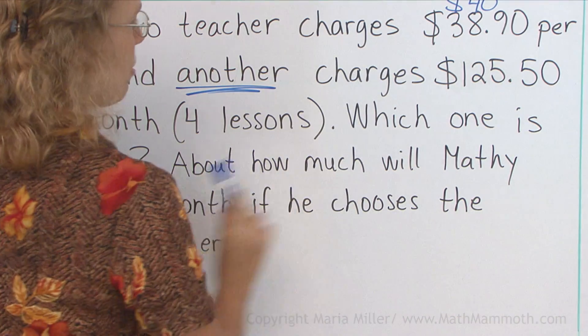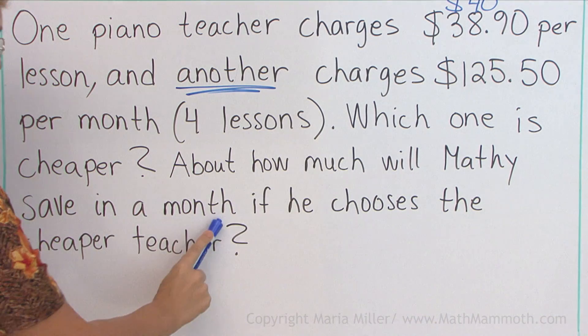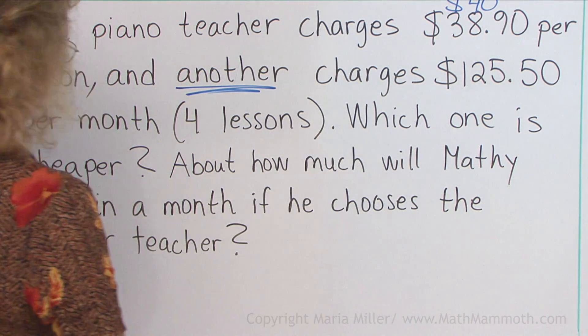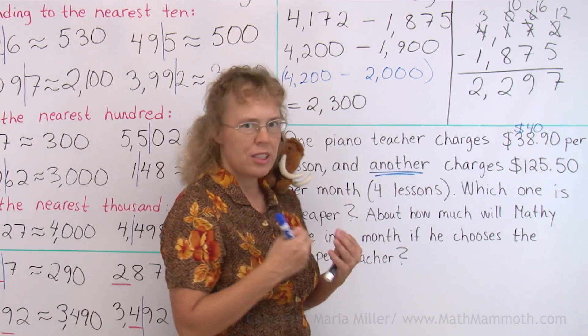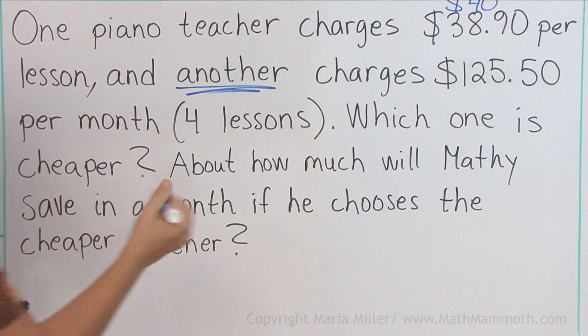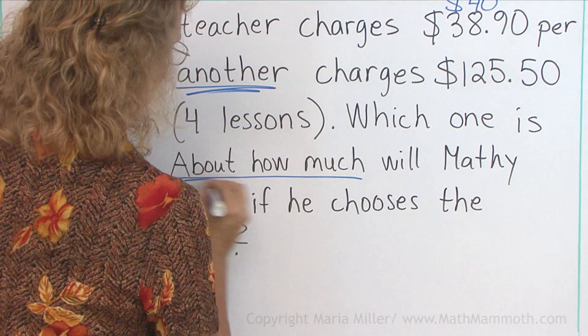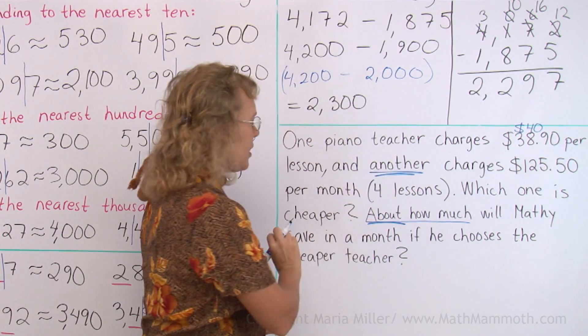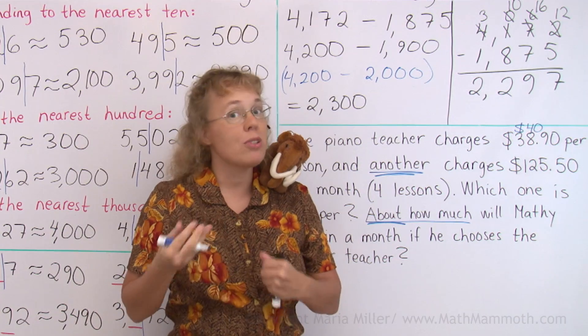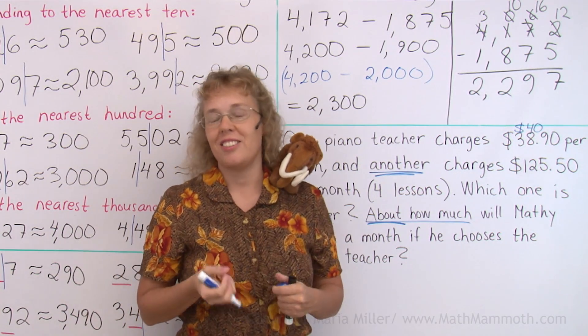About how much will Matthew save in a month if he chooses the cheaper teacher? Notice here some keywords. About how much? This word 'about' means that we can use estimation, we can use rounded numbers. We do not need an exact answer.